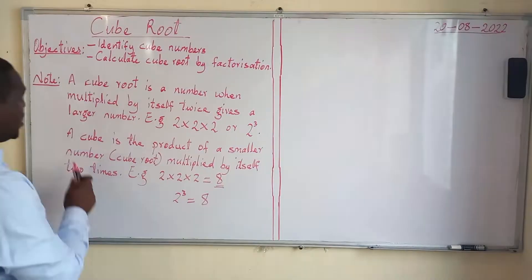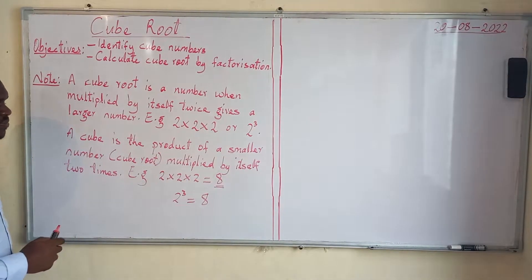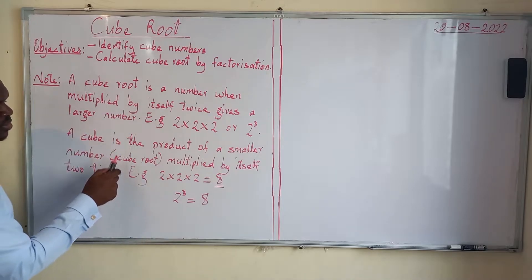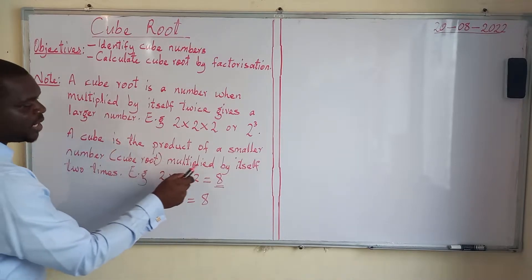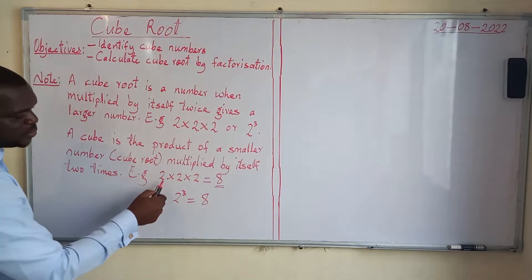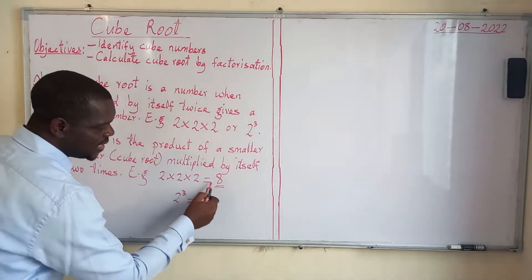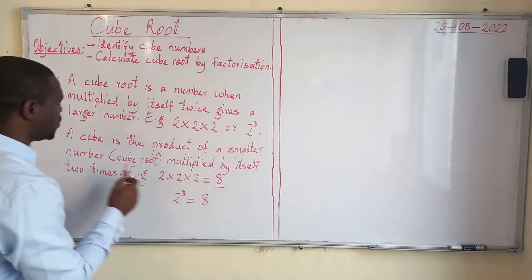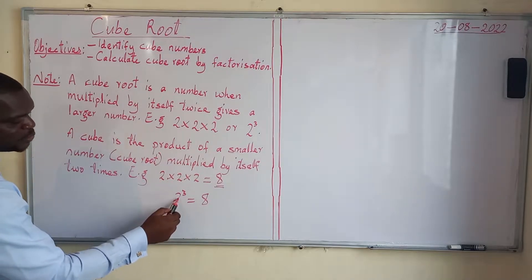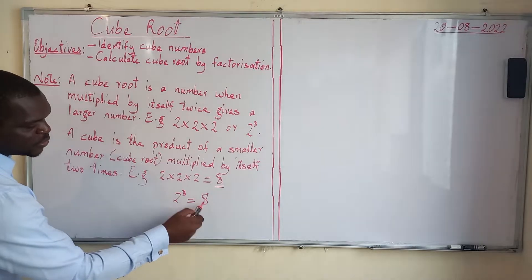A cube is the product of a smaller number — which we call the cube root — multiplied by itself two times. For example, 2 times 2 times 2 gives 8. This 8 is what we call a cube, and it can equally be written as 2 to the power 3, or 2 cube, which is equal to 8.